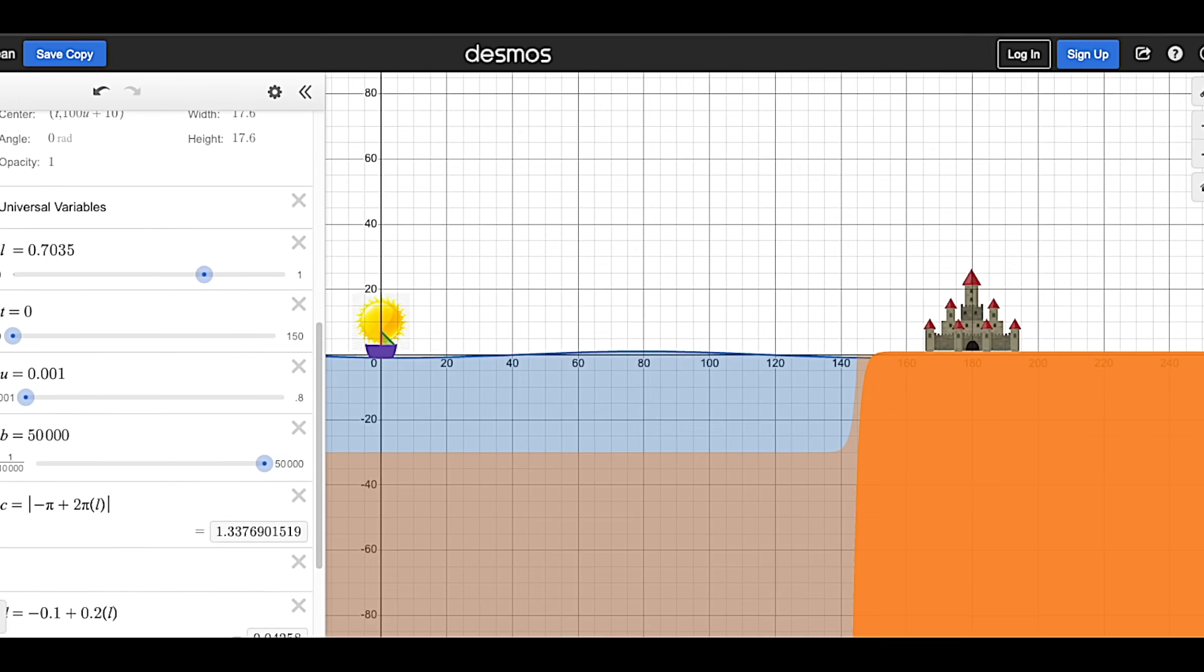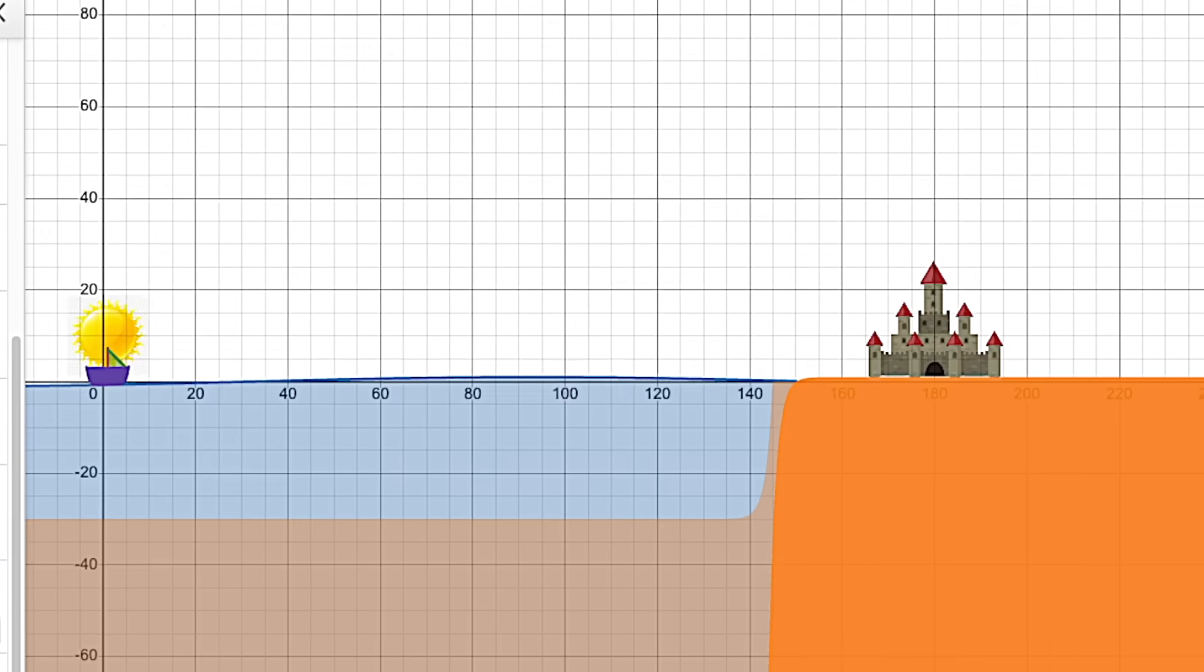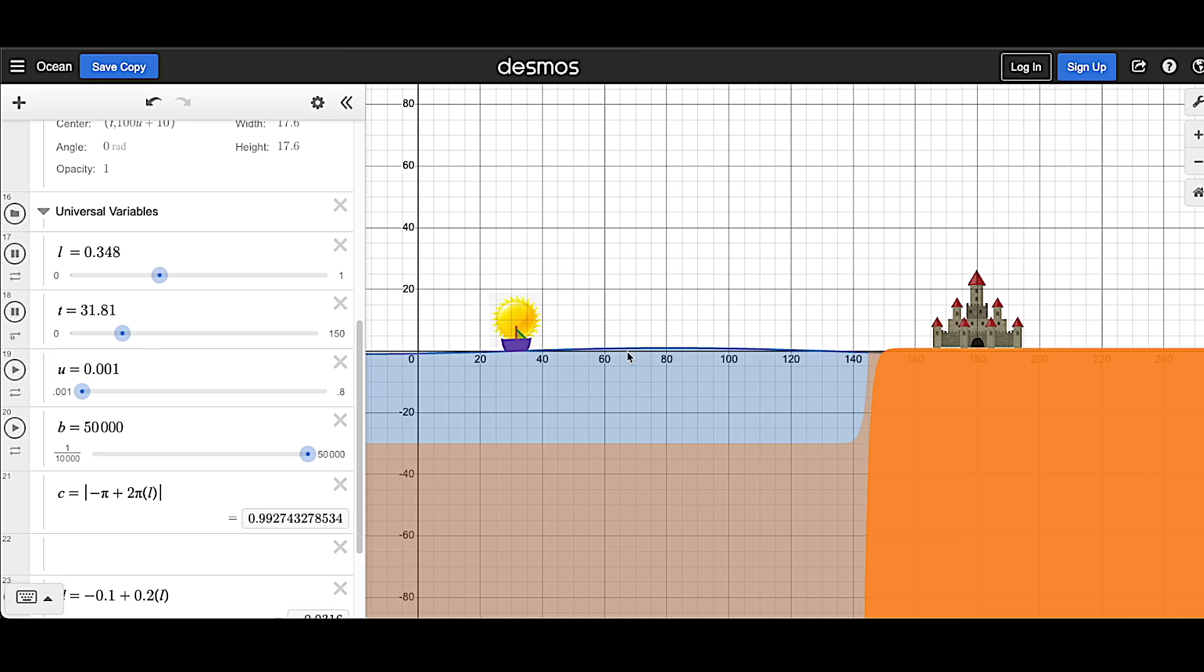And then of course, the last thing you can do is create a boat sailing to a sandcastle with a day and night cycle. And this is not something you'll be doing on the SAT. Now, if you're looking for more examples and some actual practice using these Desmos hacks, this video right here is going to go way more in depth. If you have the time to watch it, I definitely recommend it.